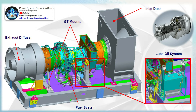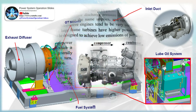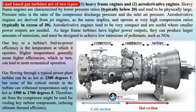Aeroderivative engines tend to be very compact and are useful where smaller power outputs are needed. As large-frame turbines have higher power outputs, they can produce larger amounts of emissions and must be designed to achieve low emissions of pollutants such as NOx.